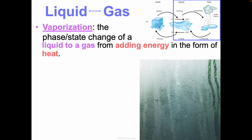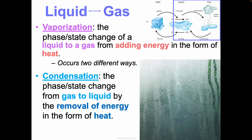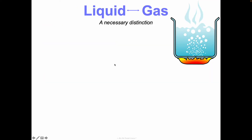Vaporization is the phase change from liquid to gas — we're adding energy in the form of heat — and we see this happen in two different ways, which we'll talk about next. The other direction is condensation: going from gas to liquid by removing energy in the form of heat. Vaporization specifically happens as either evaporation or boiling, and we'll distinguish between the two.